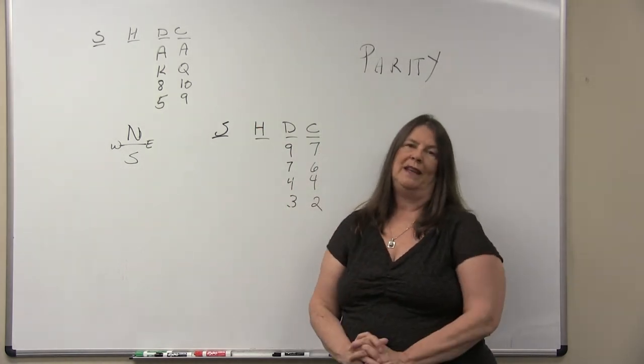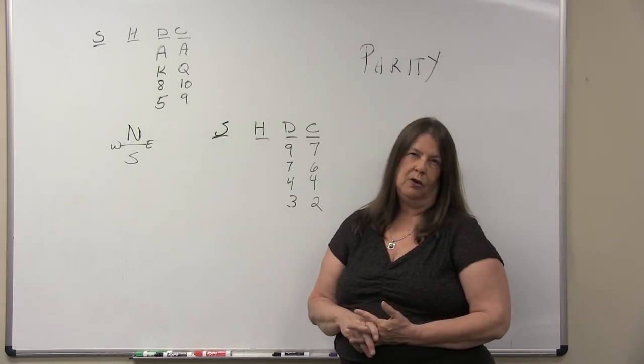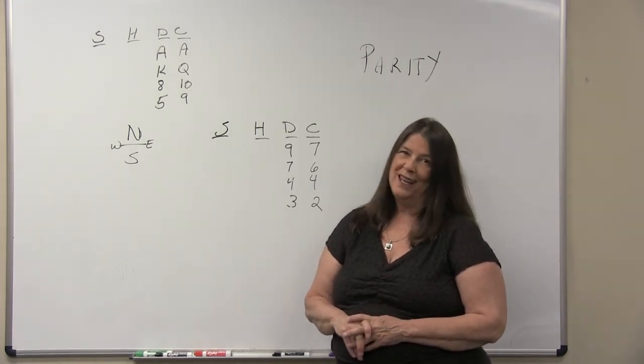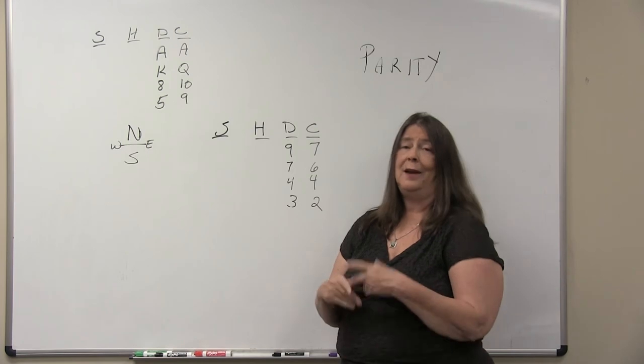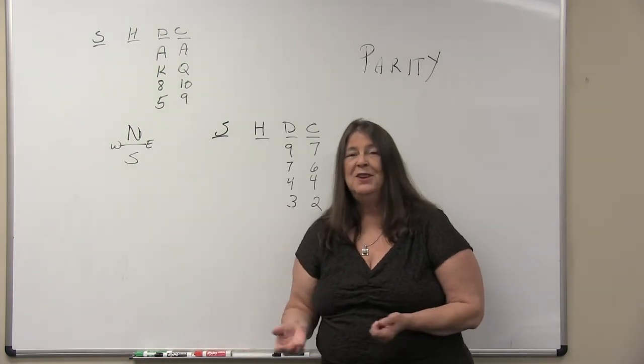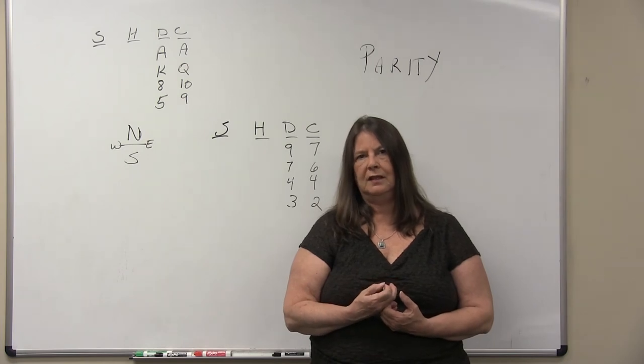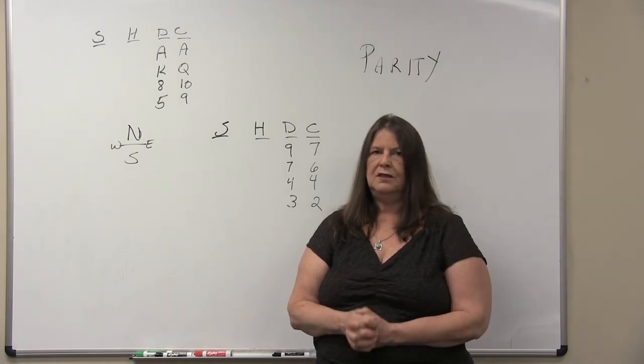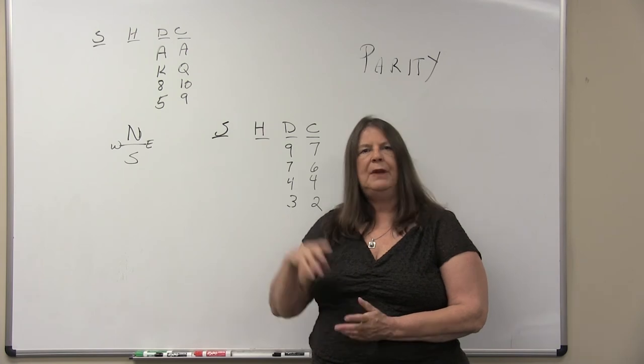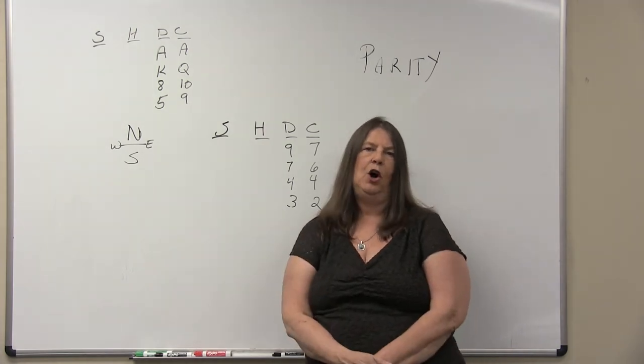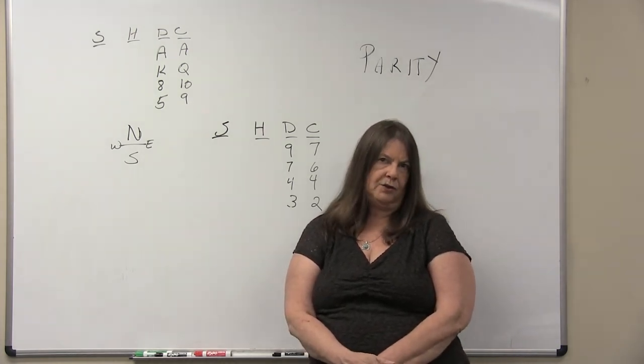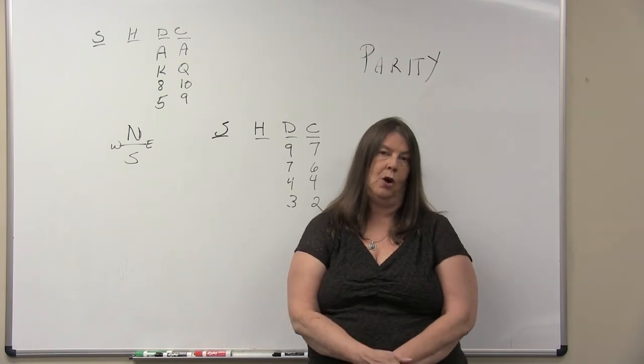But you also have to worry about keeping parity with declarer. And usually you're not looking at any of declarer's cards, unless they happen to drop them all on the table. So you have to infer whether or not declarer has length in the suit. For instance, suppose that dummy had opened and declarer had bid hearts as responder. You would know that they had at least four hearts.